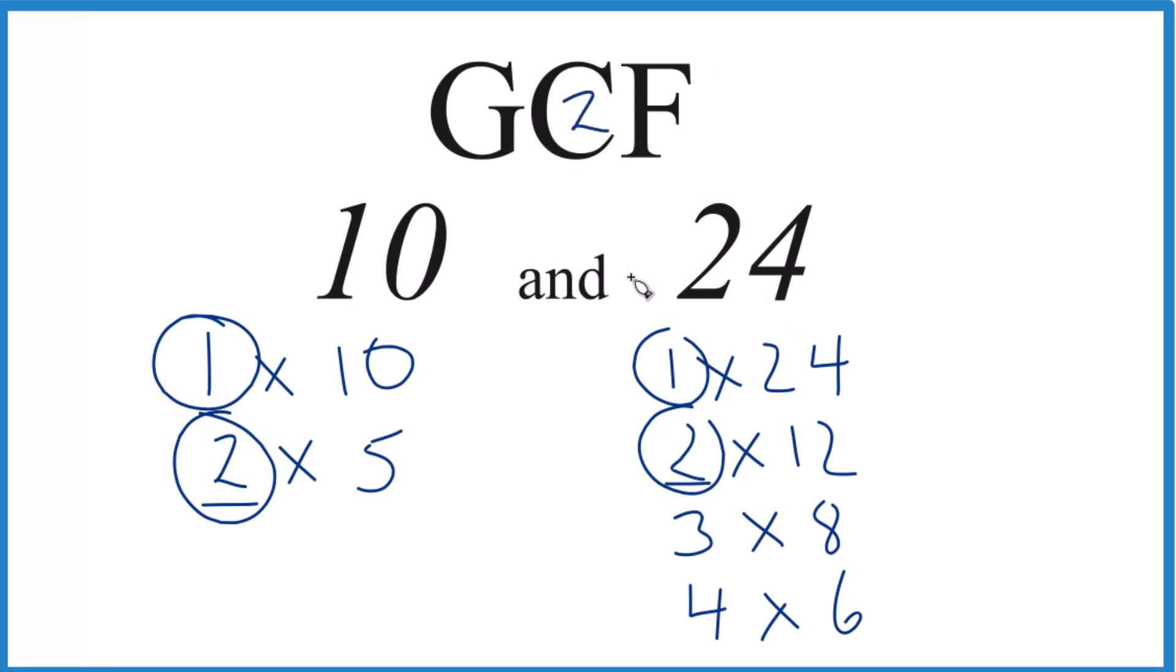There are other methods you could use to find the GCF for 10 and 24. You could use something like prime factorization, but for smaller numbers like this, this is usually easiest. This is Dr. B, thanks for watching.